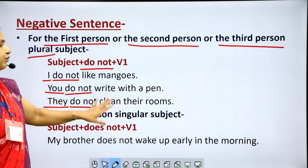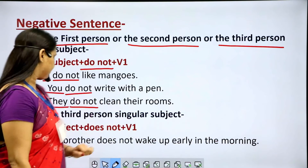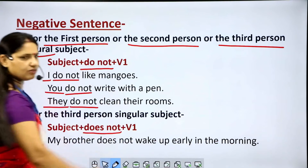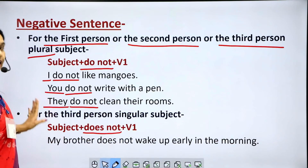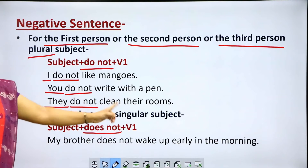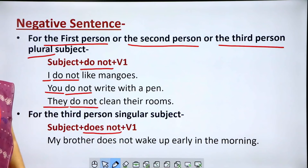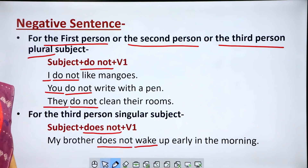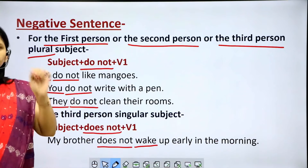Then the first form of the verb is used. For third person singular subjects, we have a different rule: subject plus 'does not' plus V1. Instead of 'do not', we use 'does not'. Remember, when we use do, does, or did, we always use the first form of the verb with them. Example: 'My brother does not wake up early in the morning.' No S or ES is added to the verb.